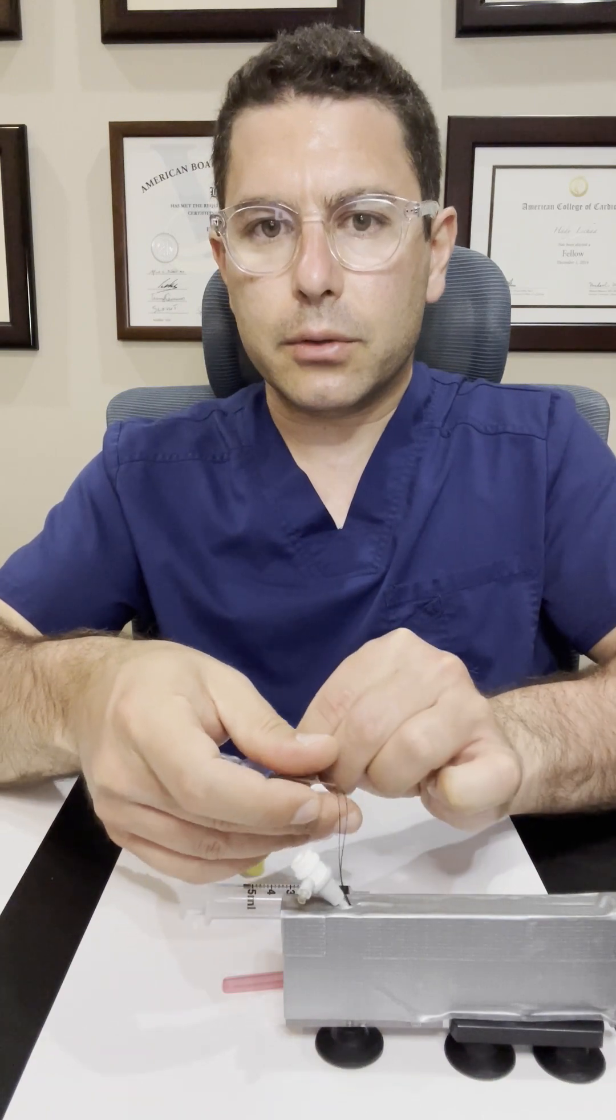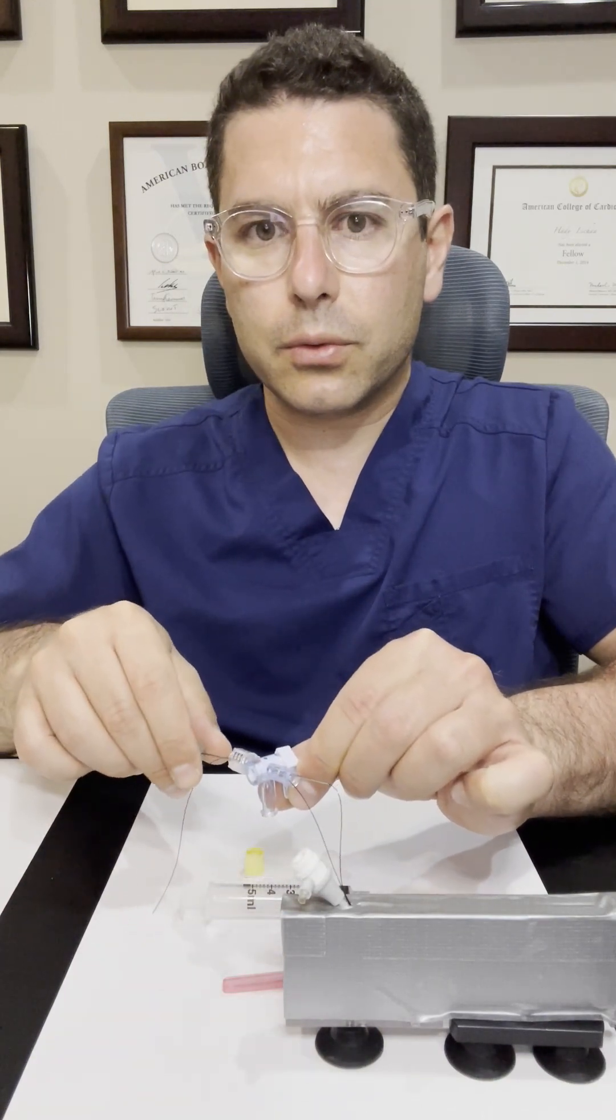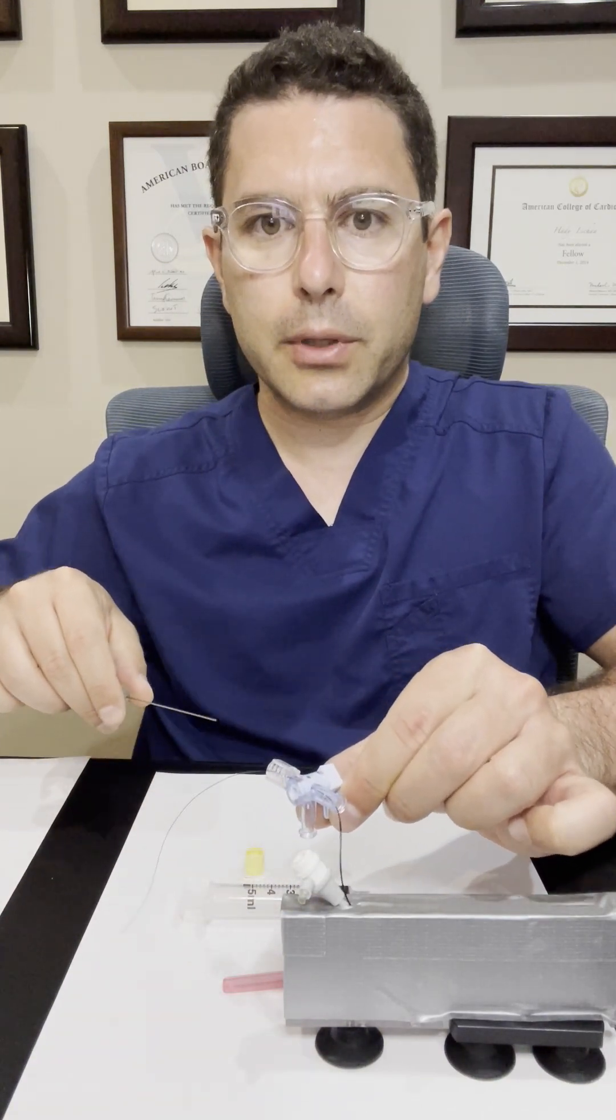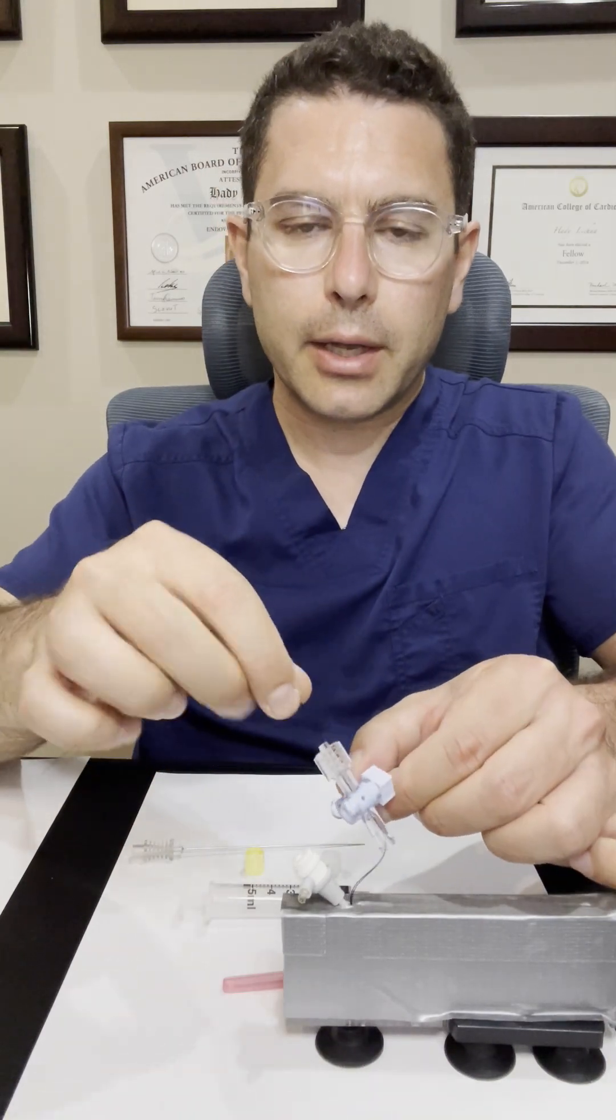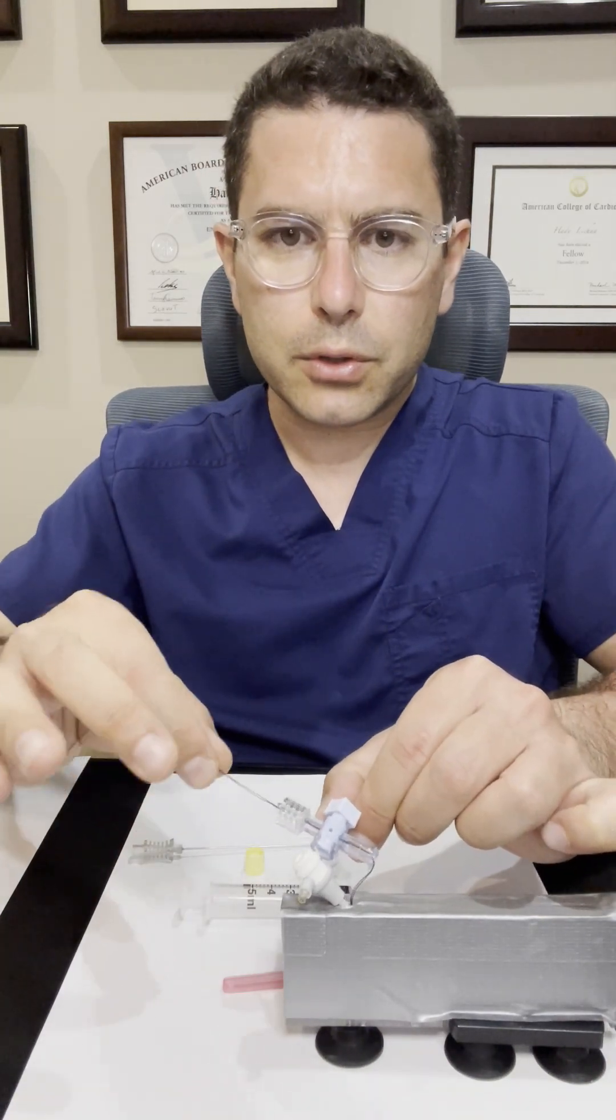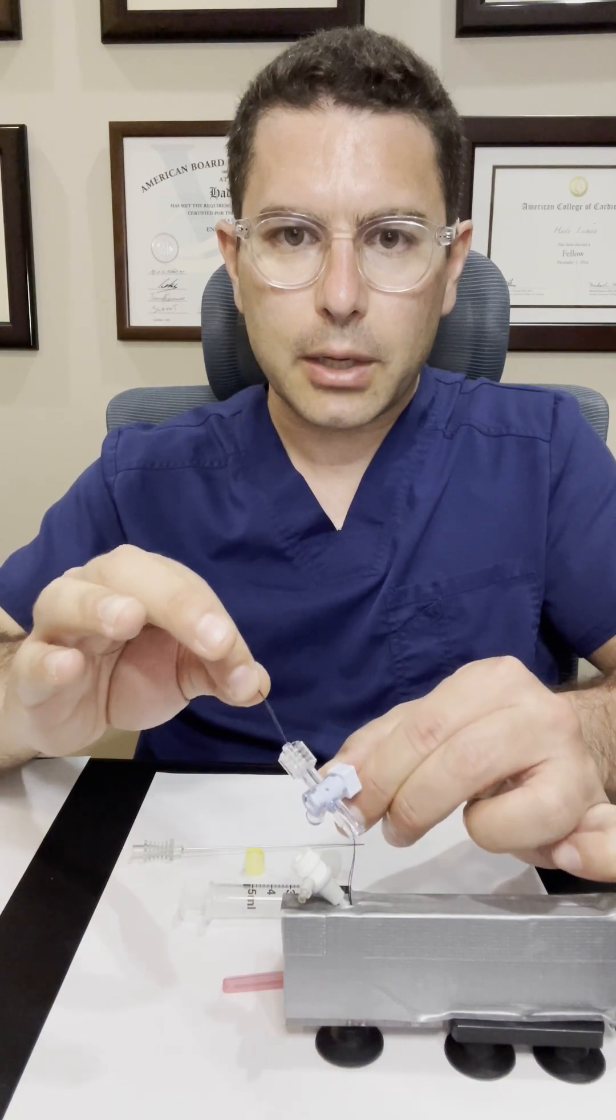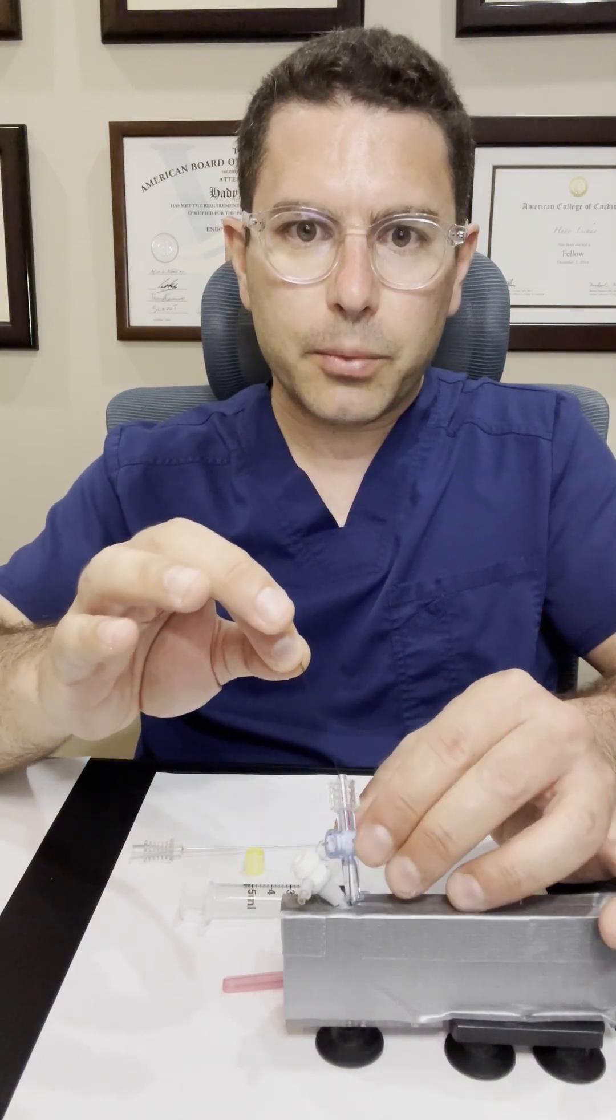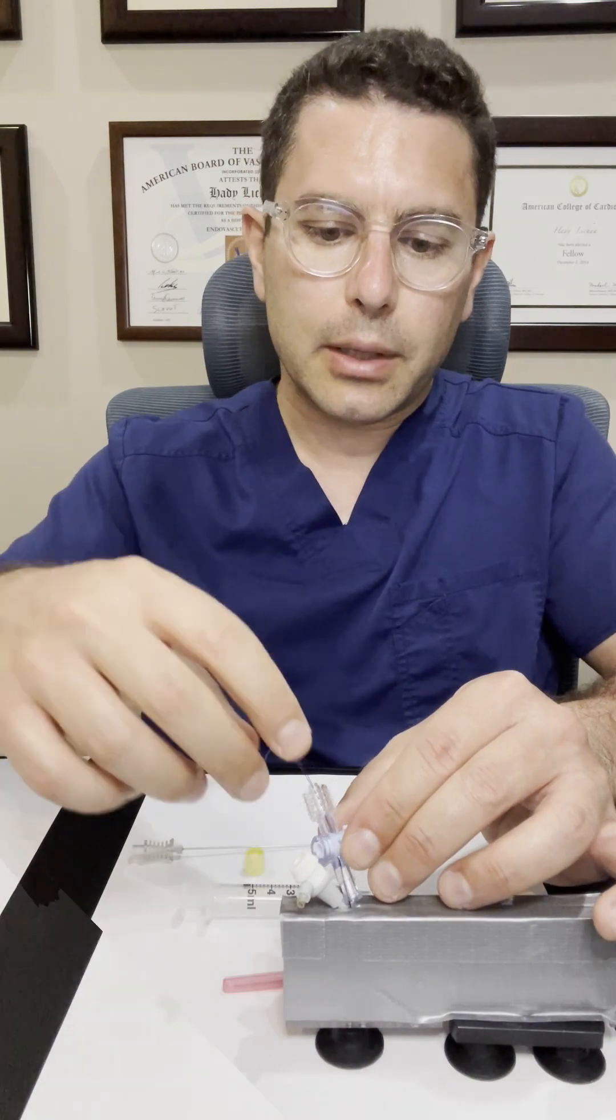Same thing. I introduce it about a centimeter or two and I pull it through the stop-cock. So now I have two sutures through the stop-cock with the female portion being directed down.